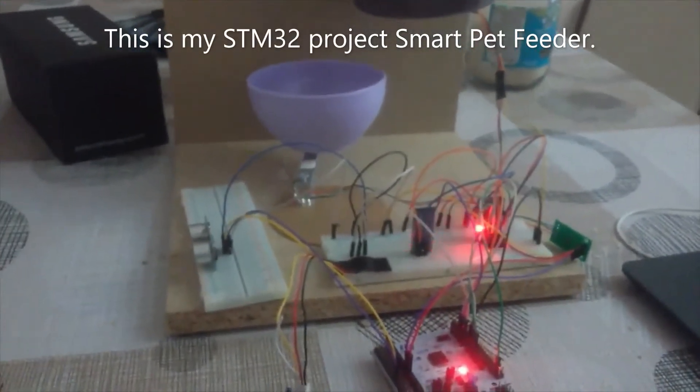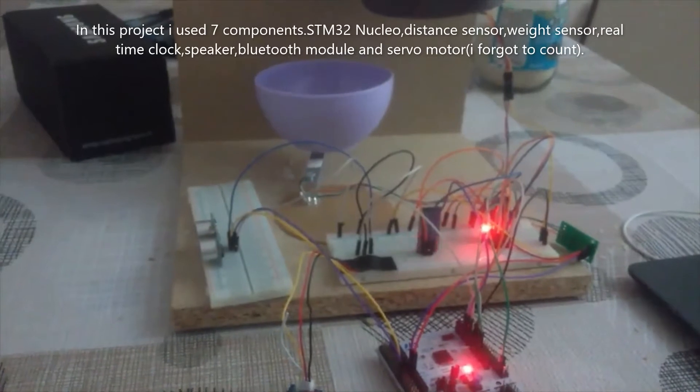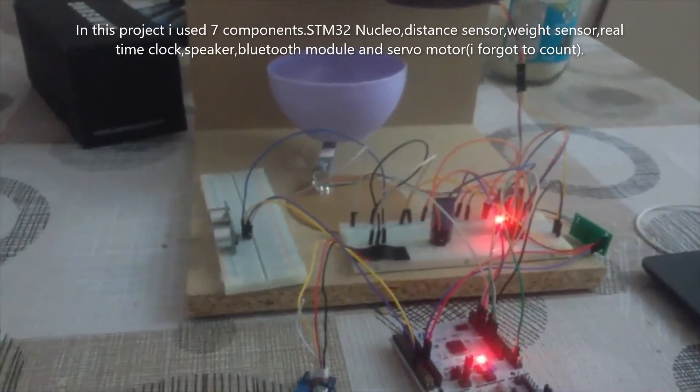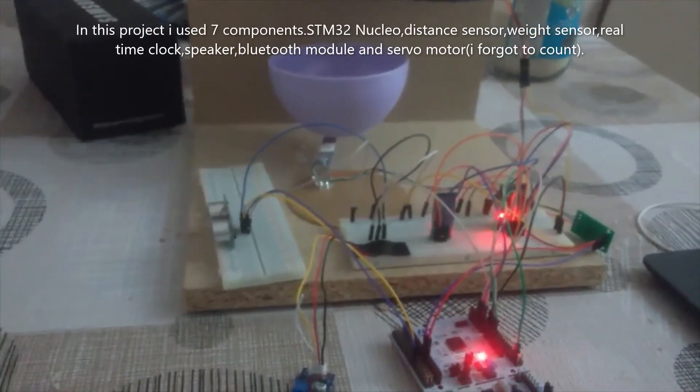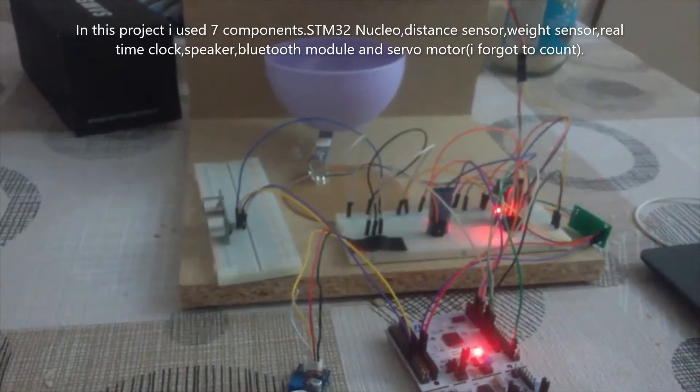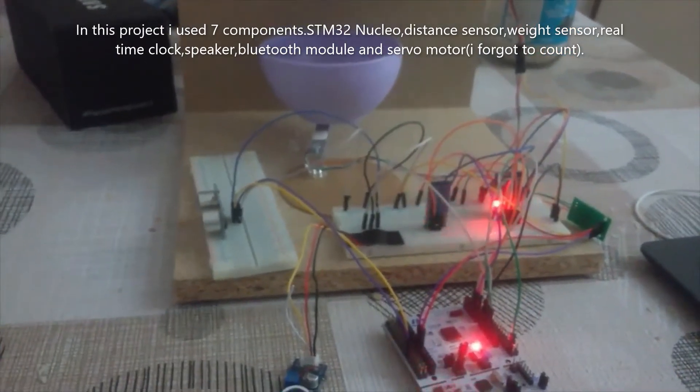This is my STM32 project SmartPath Feeder. In this project, I used seven components: STM32 Nucleo, Distance Sensor, Weight Sensor, Real Time Clock, Speaker, and Bluetooth Module.